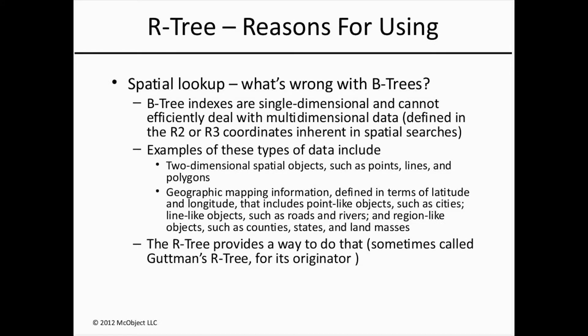Moving on to R-trees now. B-tree indexes are single-dimensional — they can't efficiently deal with multidimensional data defined in R2 or R3 coordinates inherent in spatial searches. On the slide, I've listed some common examples of multidimensional data. The R-tree index, sometimes called Gutmann's R-tree for its originator, provides a way to index multidimensional data.